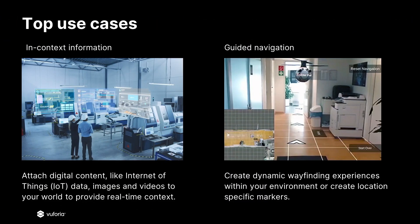There are hundreds of different ways you can create area target-powered applications. Two of the most powerful use cases are in-context information and guided navigation. In an industrial use case, you can attach digital content like real-time IoT data, images, and videos to your factory floor to give better context to frontline workers. Or in the case of an office building, you can create navigation experiences to help guide employees or visitors through your building, showing them room numbers, people's offices, booking conference rooms, and even controlling the room's environmental settings such as lighting and air temperature.